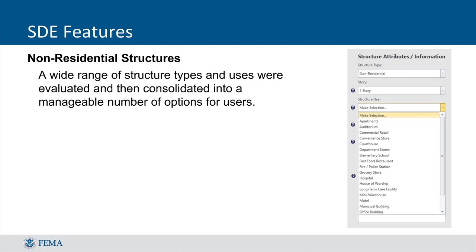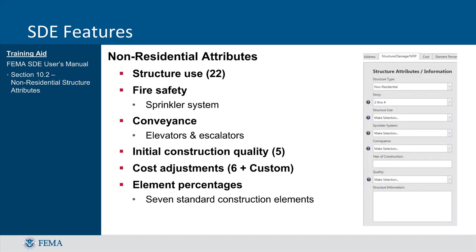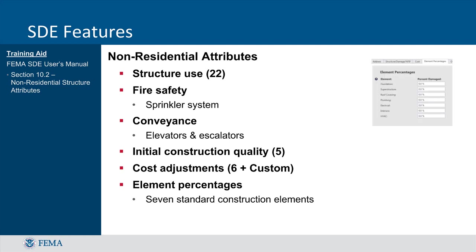The SDE tool also has the capability to perform assessments on non-residential features, which tend to vary widely based on structure use. Although the tool does not identify every non-residential structure use that may exist, it does include many options that were vetted through a range of industry experts to consolidate the most common structure uses in communities across the country. Non-residential structure attributes that can be identified include structure use, whether the structure has a sprinkler system and/or conveyance system, quality of construction, and cost adjustments. Non-residential structures are also evaluated in terms of damage to each element, but there are only seven elements to evaluate versus the twelve required for residential structures.